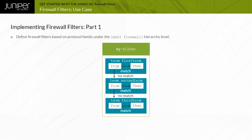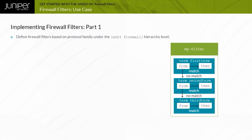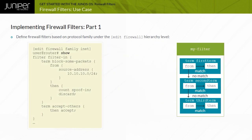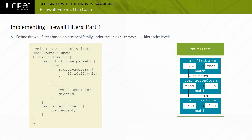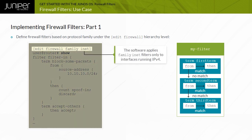Implementing a firewall filter requires two distinct steps. The first step is to define the firewall filter. In Junos OS, you define firewall filters under the Edit Firewall hierarchy level. Because Junos OS supports multiple protocol families, you must navigate down to the appropriate family hierarchy level. This sample illustrates an IPv4 firewall filter defined under the Edit Firewall Family INET hierarchy level.